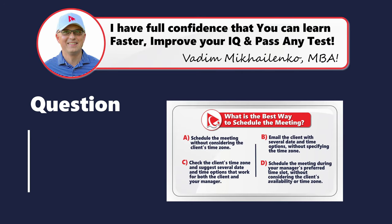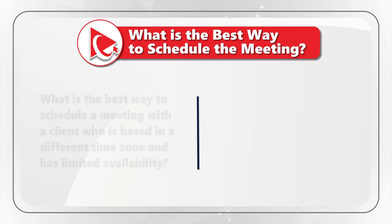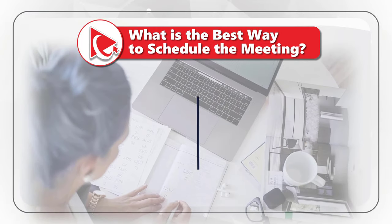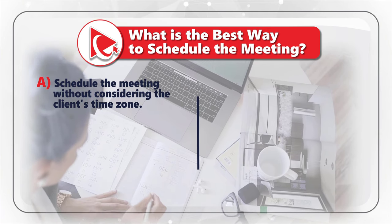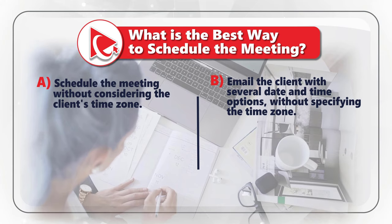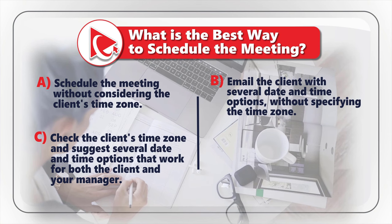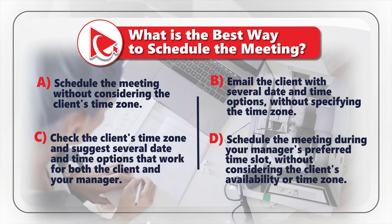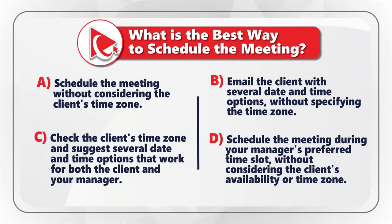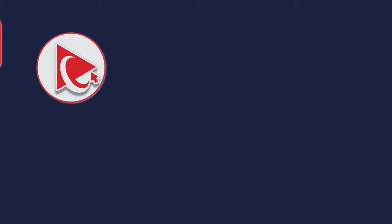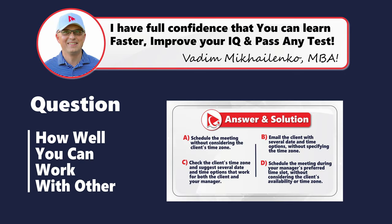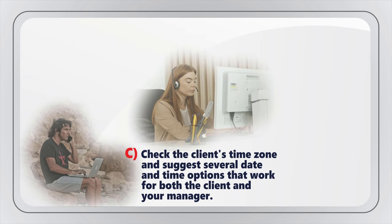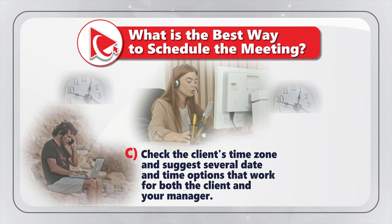Here's an interesting question to determine how well you can work with others. You need to determine the best way to schedule a meeting with a client who is in a different time zone and has limited availability. Choices: A: schedule without considering the client's time zone; B: email the client with date and time options without specifying the time zone; C: check the client's time zone and suggest several options that work for both the client and your manager; D: schedule during your manager's preferred time slot without considering the client. The correct answer is Choice C, as it takes into consideration both the client's availability and time zone.